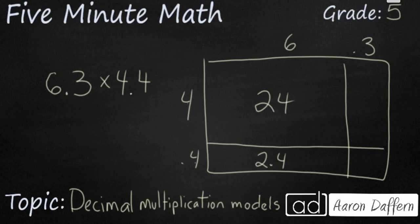Well, 4 times 3 is 12, so 4 times 0.3 is 1.2. And then 0.3 times 0.4 is going to be 0.12.